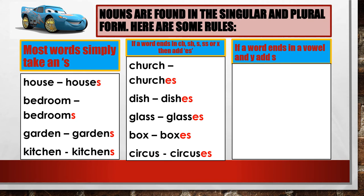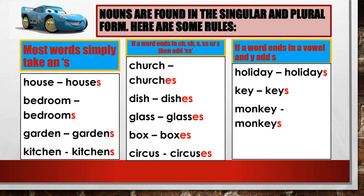If a word ends in a vowel and Y, add S. Examples: one holiday, many holidays. One key, many keys. One monkey, many monkeys. One guy, many guys.